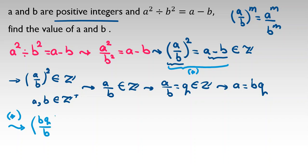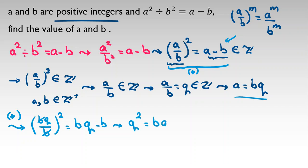Now I rewrite the main equation replacing a with bq. So bq over b squared equals bq minus b. I cancel b from both sides — b is a positive integer so cancellation is valid — giving q squared on the left and b(q minus 1) on the right.